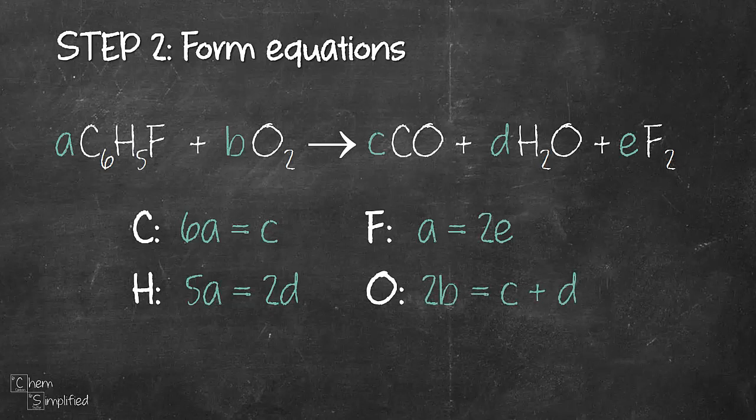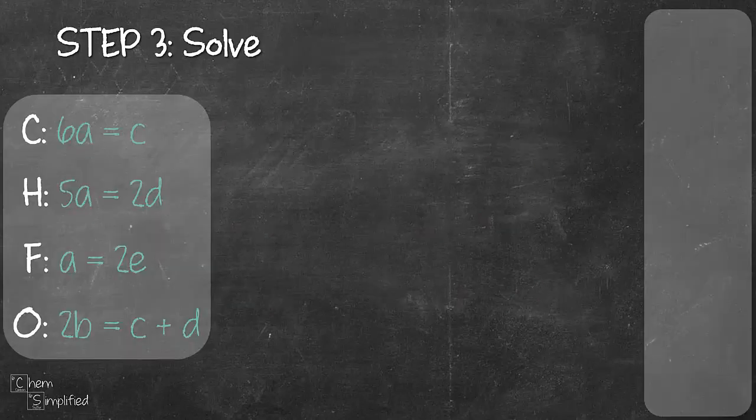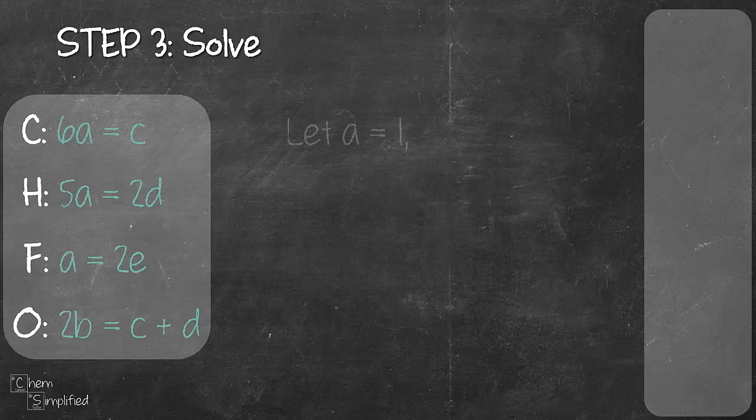We now have four equations which we can use to solve for the value of A to E. So in order to solve the equations, we'll need to make an assumption. Usually I just start by assuming one of the coefficients equals 1, since 1 is the smallest positive integer. So let's start with A equals 1.